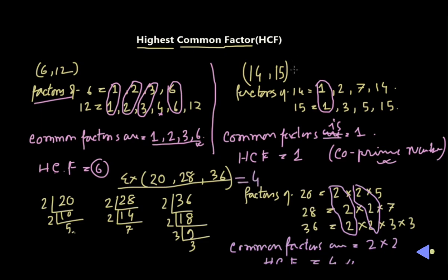To summarize: for 14 and 15, the HCF is 1 since they are co-prime. For 6 and 12, the HCF is 6, which is also an exact divisor of 12 and is the highest common factor. That is the process to find the HCF.